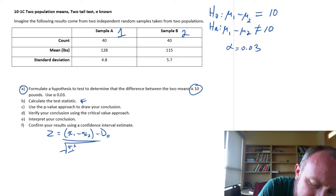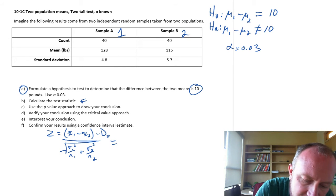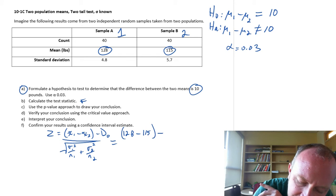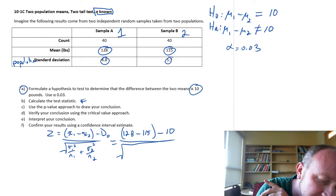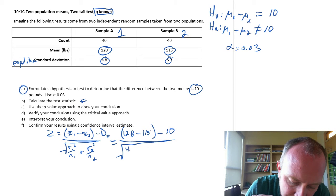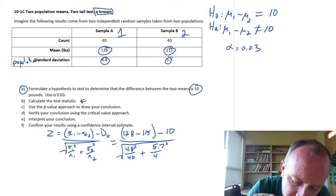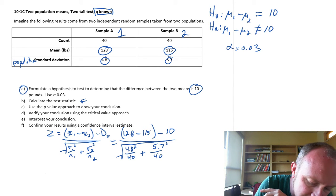This is sigma 1 squared over n1, sigma 2 squared over n2. So here I've got my sample means: 128 minus 115. My hypothesized difference is 10, divided by—here's my standard deviations. Here it tells us sigma is known, so these must be my population standard deviations. So this is 4.8 squared over my sample sizes. They both say 40.